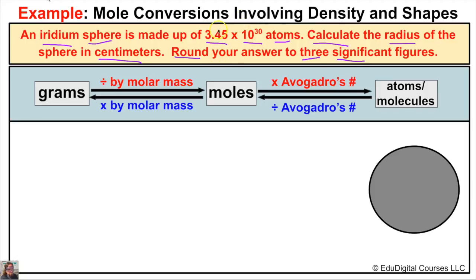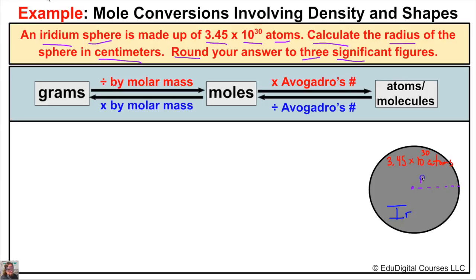When we're given a problem like this where we have some sort of shape and some dimensions, what I like to do is draw a little picture. So we have our sphere here. What we know about this sphere is it's made of iridium and it's made up of 3.45 times 10 to the 30th atoms of iridium. Based on this information only, what we need to figure out is the radius of this sphere.